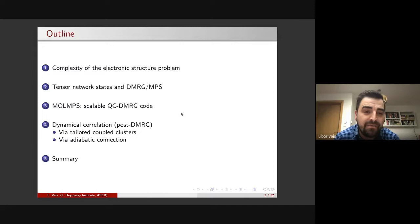Okay, so from the outline, I will very briefly introduce the problem, say a few words about tensor networks, but I would like to rather concentrate on our recent works. This is our scalable QC DMRG implementation which we have recently developed and tested. And then I'm going to talk about dynamical correlation, because DMRG itself is a fantastic method that can capture accurately strong correlation within some active space, which might be quite large. But if you would like to do some chemical predictions, you certainly need dynamical correlation outside of the active space. There are several methods. We have also recently worked on tailored coupled clusters and more recently also with adiabatic connection technique.